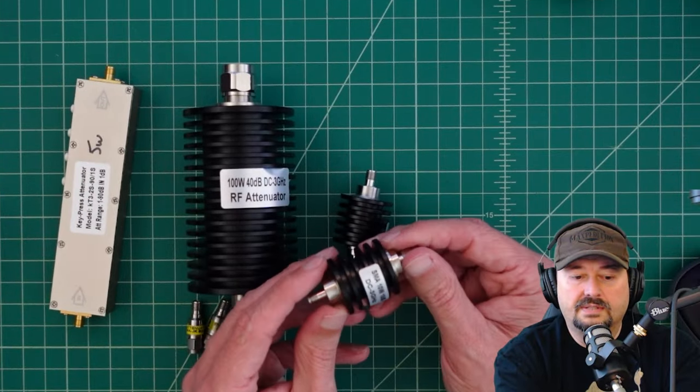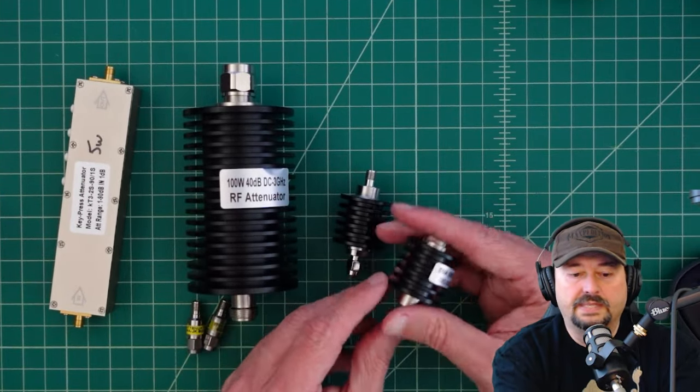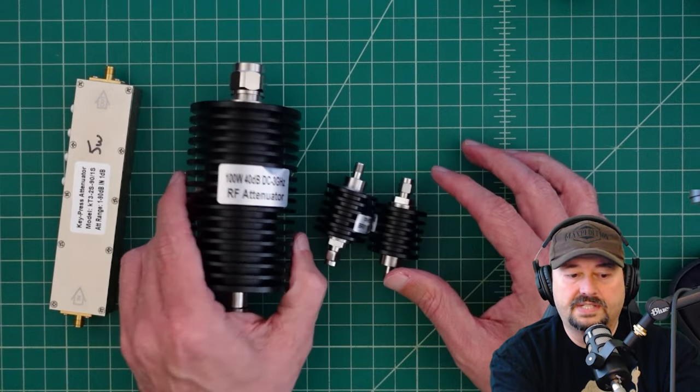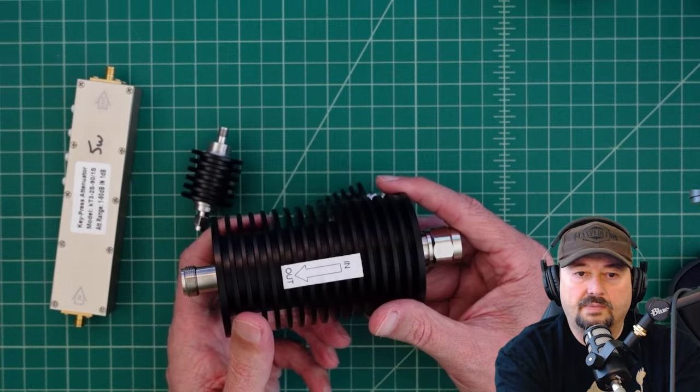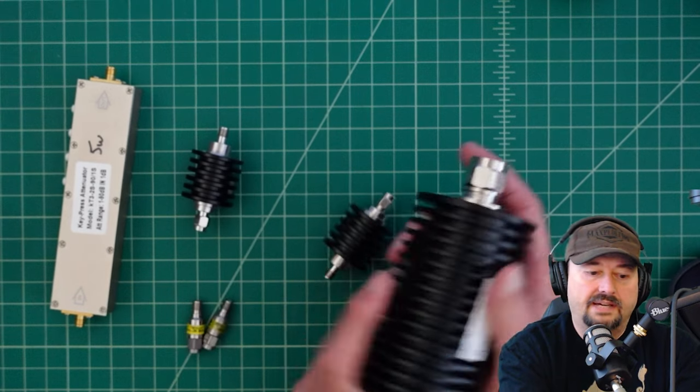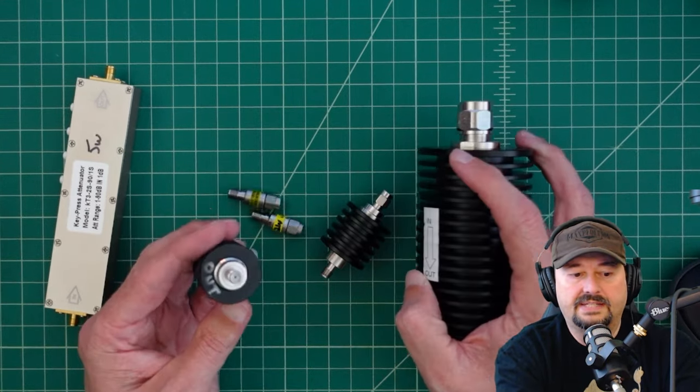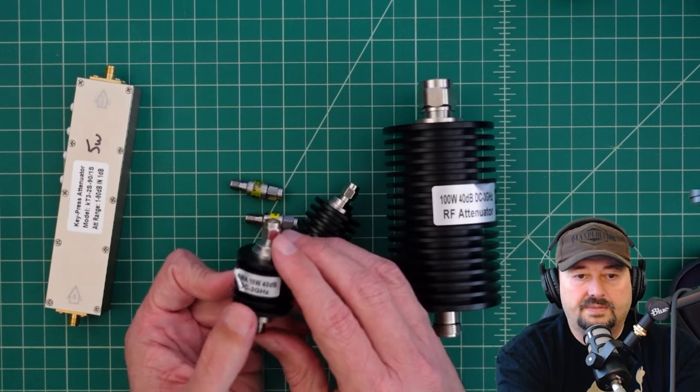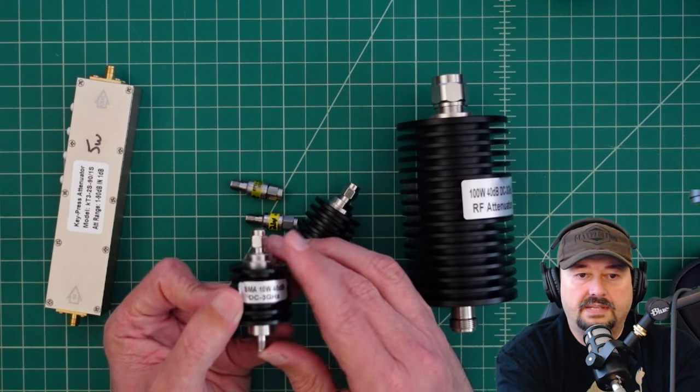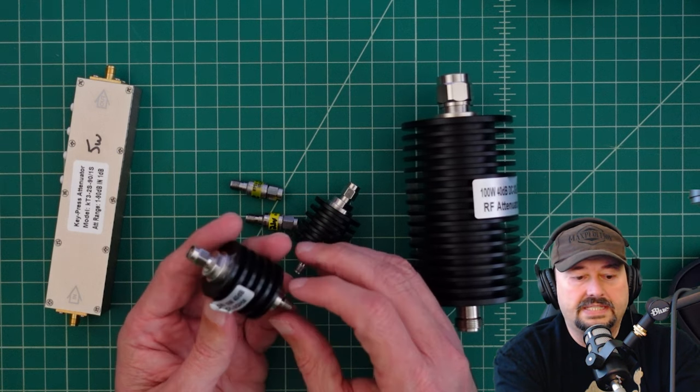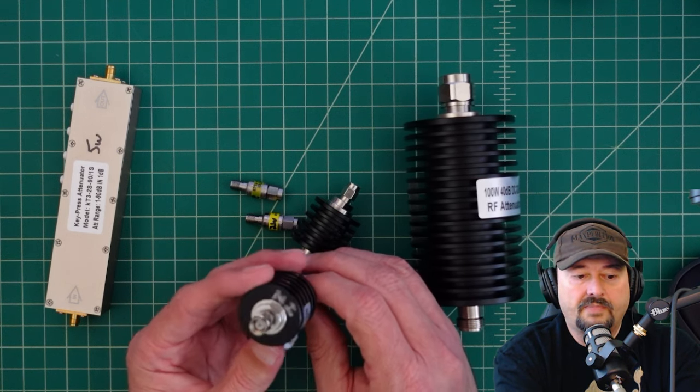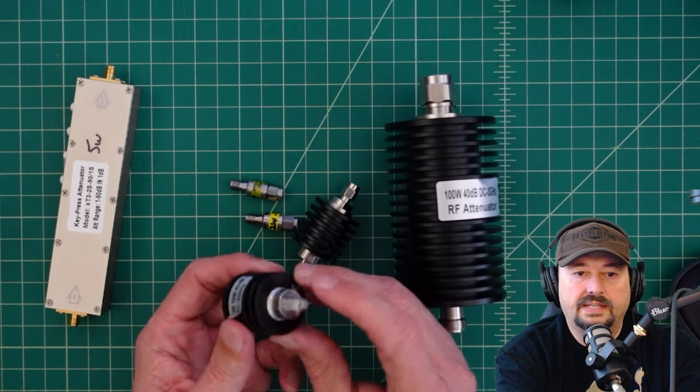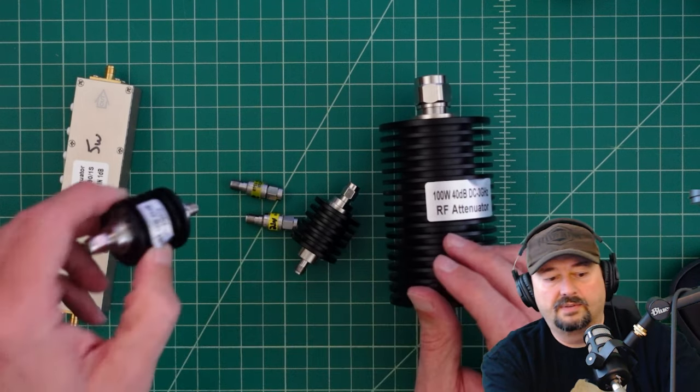So with these attenuators, a lot of them are bi-directional, meaning that you could feed your signal into either side. But a lot of them will come with a sticker like this on them that says In and Out. Now, this one had a sticker on it, but it's missing because you can see even this sticker is starting to come off. This one is 10 watts at 40 dB in DC to 3 gigahertz. And I did mark this in, and I marked this side out, but I don't think it really matters too much.